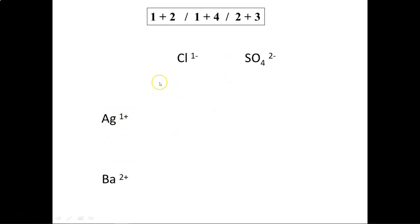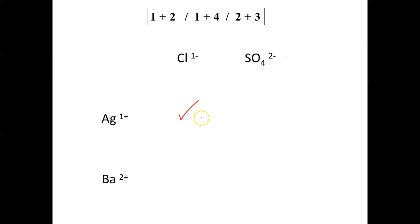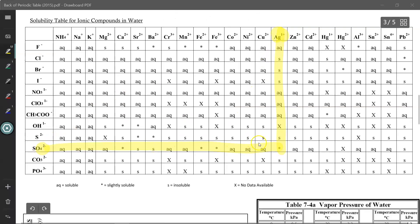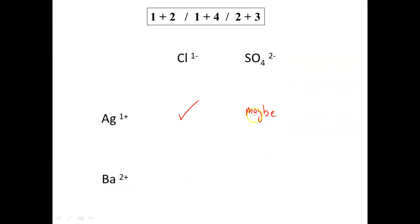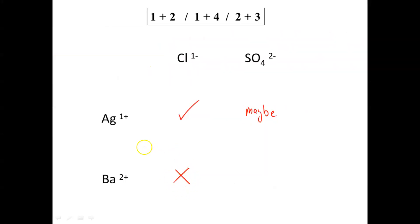Next, we check the solubility chart to see which combinations, which pairs, will result in a precipitate forming. So let's look at silver and chlorine. It says solid, so we say that there is going to be a precipitate form. What about silver combined with sulfate? It has a star, and the star means slightly soluble. So I'll put this combination as a maybe. What about barium and chlorine? It says aqueous, so no precipitate would form in this combination. What about barium and sulfate? It says solid, so yes, a precipitate will form here.